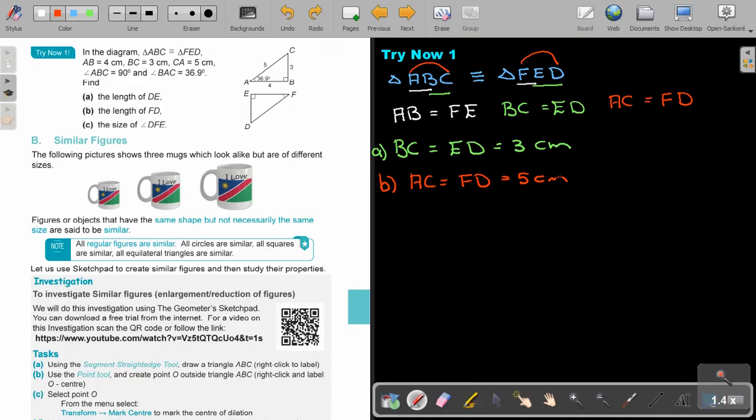And then the last one, angle. Now, let's just write down the angles first. So I can say angle A is equal to angle F. Beginning, beginning. Angle B is equal to angle E. Middle, middle. Angle C is equal to angle D. Last, last. So, basically, if I'm asking DFE, it's actually angle F. So, I can go and say angle A is equal to angle F is equal to 36.9.